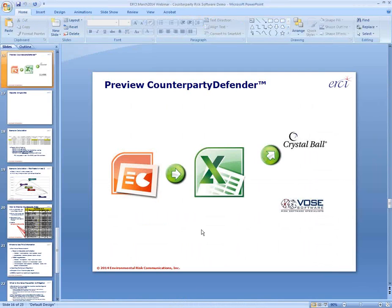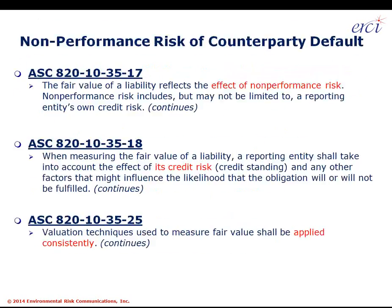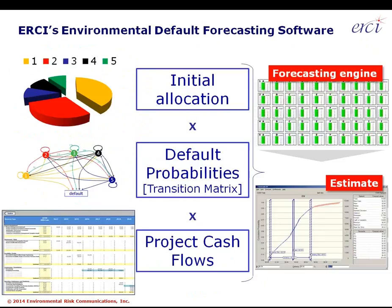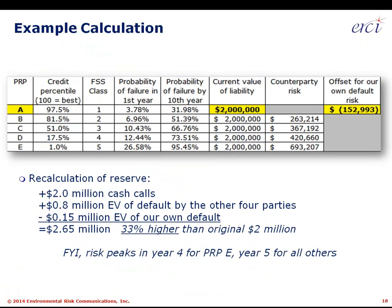That means — going back to the presentation — our own risk is ballparked at $153K, and we expect to see the counterparty risk of default to be around $800K: that $663K number marked up for the $153K of our own default risk. In other words, our net reserve balance will be $2.65 million as the expected value.